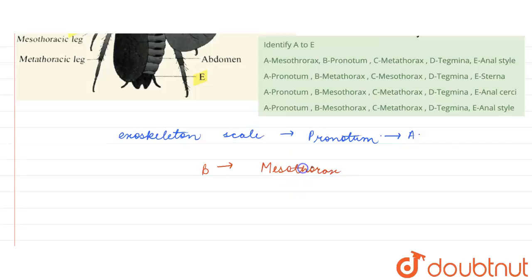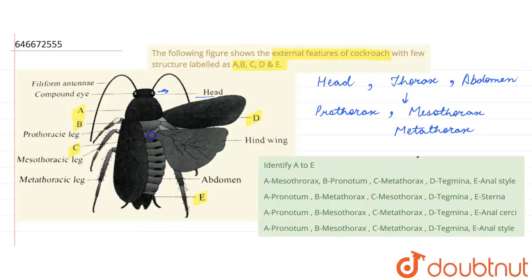And then below mesothorax, we will have metathorax. So this region, this was mesothorax, this will be metathorax. So this is C, C is metathorax here.